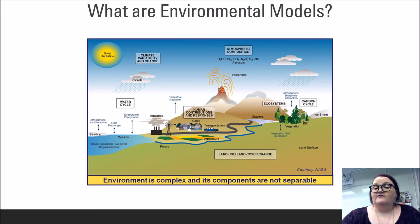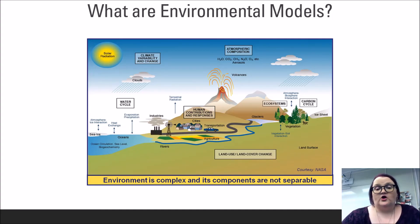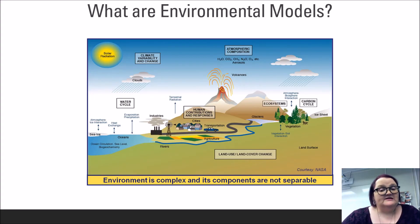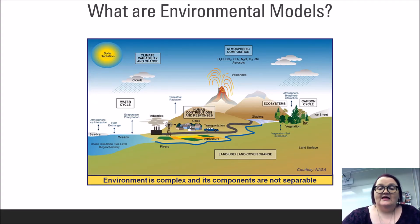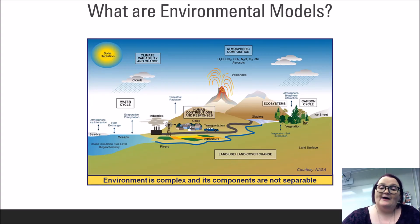One of the major ways that environmental scientists explore and attempt to understand the natural world and the human impact on it is through the use of models. These models are often complex and nuanced because the natural world is complex. Each component of the natural world is both its own system and a smaller part within a much larger system. These individual systems cannot be separated from one another, and therefore it is impossible to study them in isolation and get a clear and true picture of what is happening and what might happen in the future.